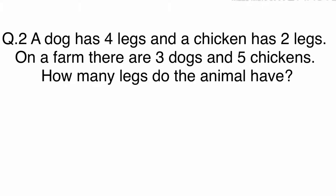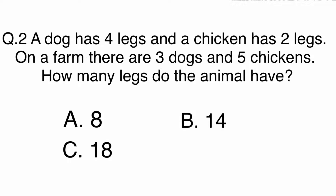Question 2. A dog has 4 legs and a chicken has 2 legs. On a farm, there are 3 dogs and 5 chickens. How many legs do the animals have? A. 8, B. 14, C. 18, or D. 22.